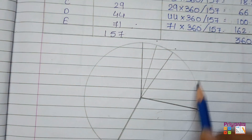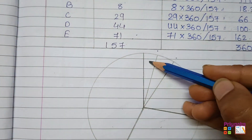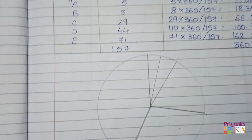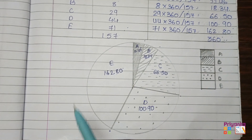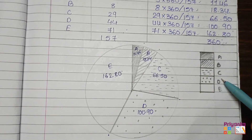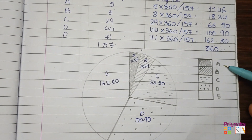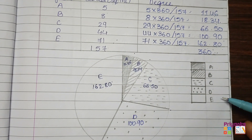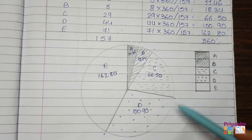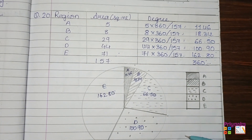Add a display key showing what each section represents — region A, B, C, D, and E. After completing the circle, don't forget to make the legend showing what you are representing for each region. This completes the pie diagram after all calculations.